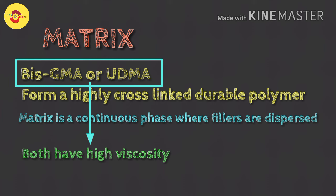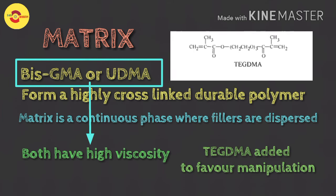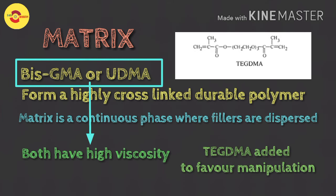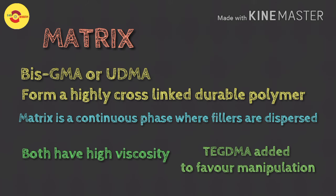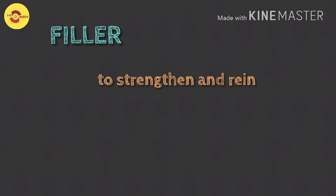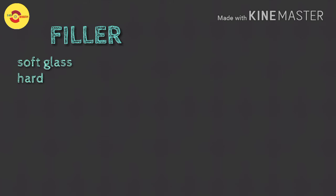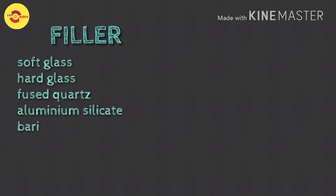UDMA and bis-GMA both have high viscosity, and to facilitate more blending and manipulation, a low molecular weight, highly fluid monomer such as TEGDMA (triethylene glycol dimethacrylate) is also added. The second main component is filler. Fillers are employed to strengthen and reinforce composites, as well as to reduce curing shrinkage, and thermal expansion. They include soft glass, borosilicate, hard glass, fused quartz, aluminium silicate, and lithium aluminium silicate.